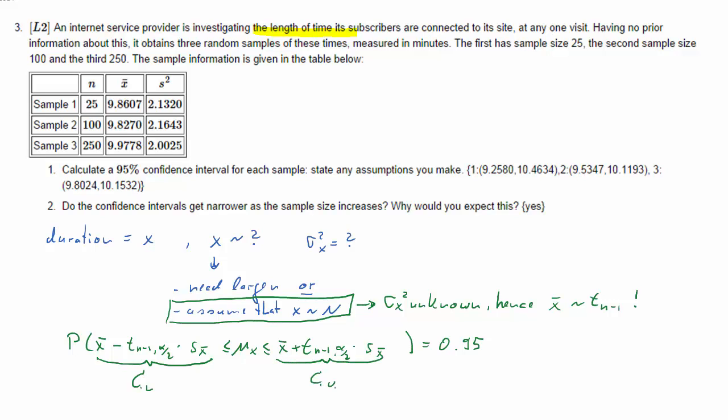And CL and that's the upper bound CU. So since we have three different samples, we will actually do all these calculations in a table. So we'll extend this table which we have here. For each of the three samples, we know the sample size, X bar, and S squared of X.